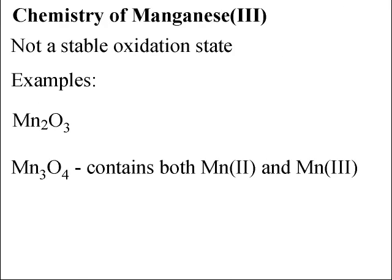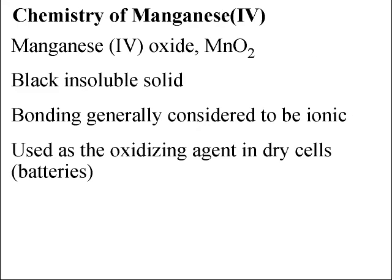Next is manganese(III), which is not a stable oxidation state for manganese. Some examples include Mn₂O₃, which is manganese(III) oxide, and Mn₃O₄, which contains both manganese(II) and manganese(III). Next is manganese(IV); a common example is manganese(IV) oxide, MnO₂. This is a black insoluble solid with generally ionic bonding, and it is widely used as the oxidizing agent in certain types of batteries.